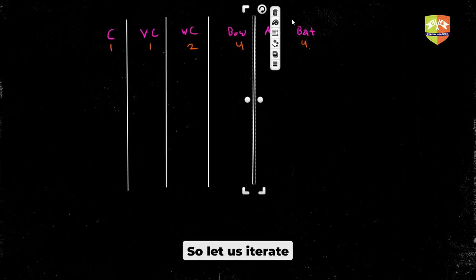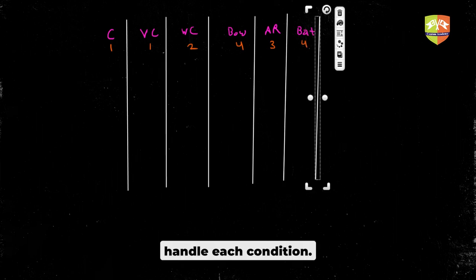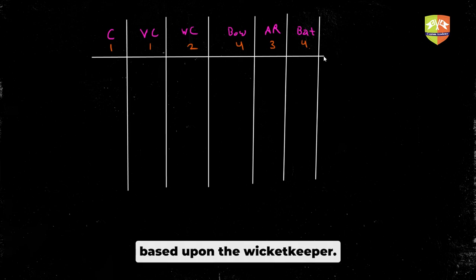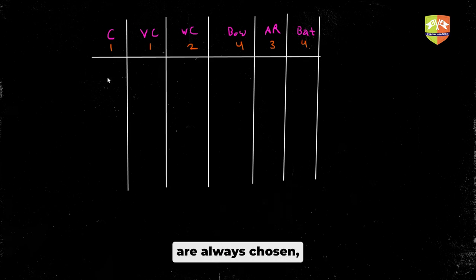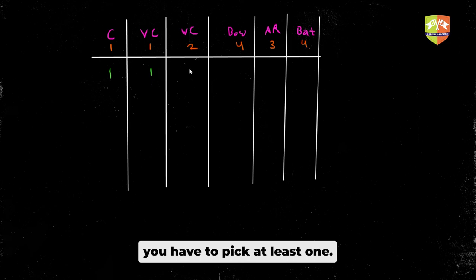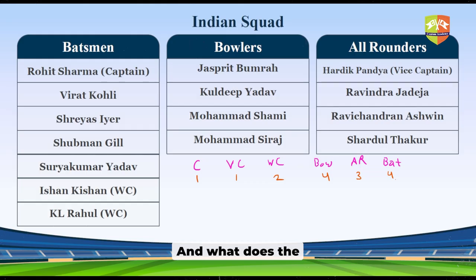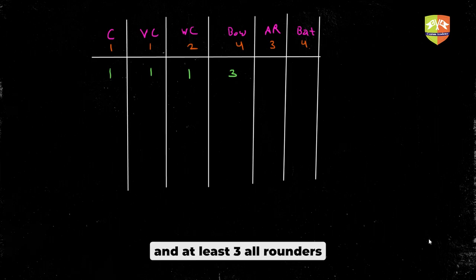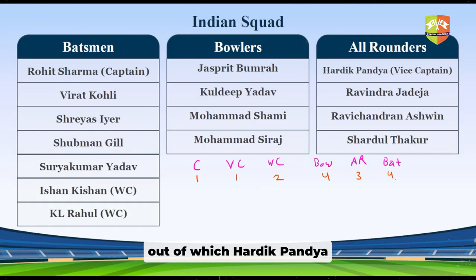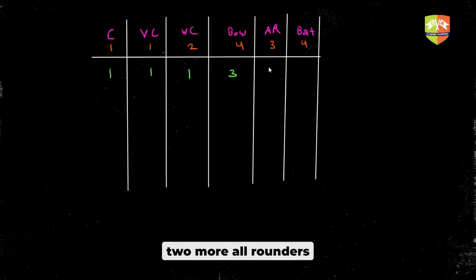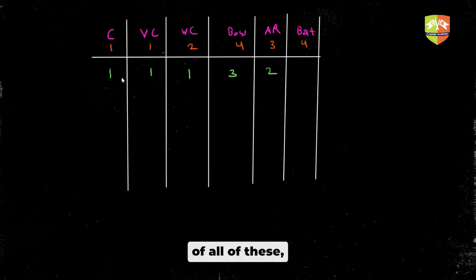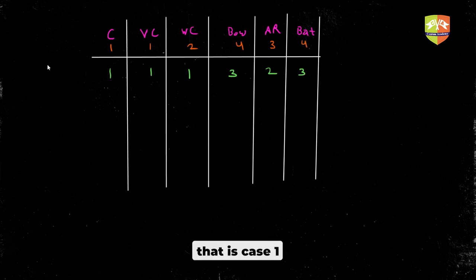Let us iterate systematically, handling each condition one by one. Starting with one wicket keeper, minimum three bowlers, and minimum two additional all-rounders (since vice captain is already chosen, making three all-rounders total). Adding up: 1 captain + 1 vice captain + 1 keeper + 3 bowlers + 2 all-rounders = 8 players, so we must choose three batsmen out of four remaining. That is Case 1.